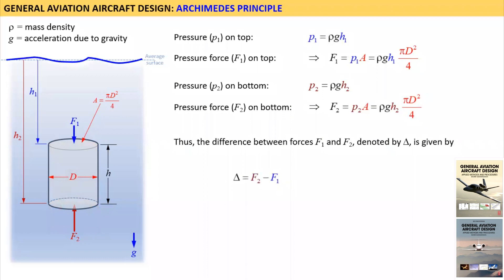This means that delta is the net vertical force acting on the cylinder that pushes it upward toward the surface of the liquid. Delta is the buoyancy force.